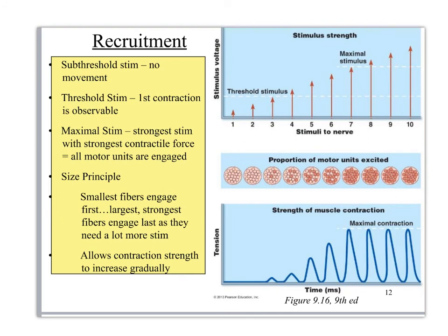The second panel shows actual recruitment of muscle cells within a muscle belly. Sub-threshold signals don't generate an action potential and all cells remain inactive. At threshold, only two muscle cells are engaged and you get a little force. As the signal gets stronger, more cells engage — two, three, four, five, six, seven cells — each adding more force, up until you reach maximal stimulus where every single motor unit is engaged.